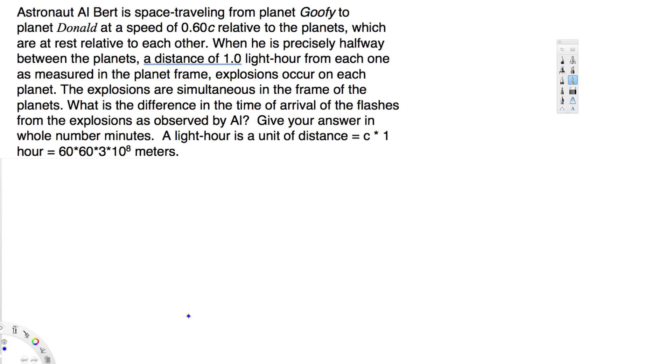Hey, what's going on guys, let's try this problem right here. This question is asking: astronaut Albert is space traveling from planet Goofy to planet Donald at a speed of 0.6c relative to the planets, which are at rest relative to each other. When he is precisely halfway between the planets, a distance of one light-hour from each.